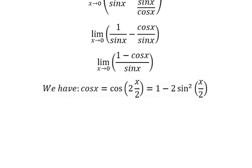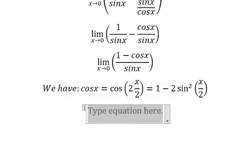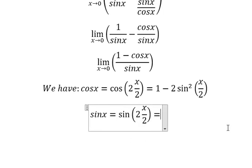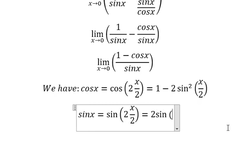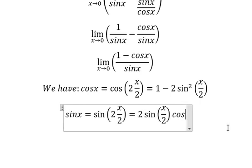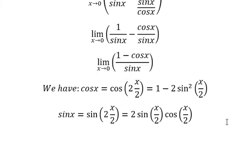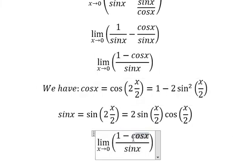For sin x, that is sin of 2 times x over 2. So this one, we can write as 2 sin of x over 2 times cos of x over 2. I will put this formula here.